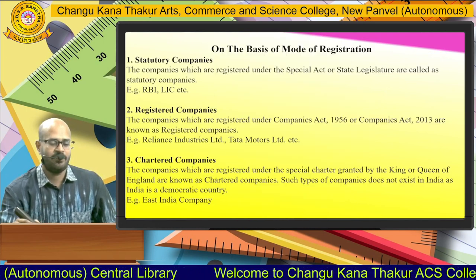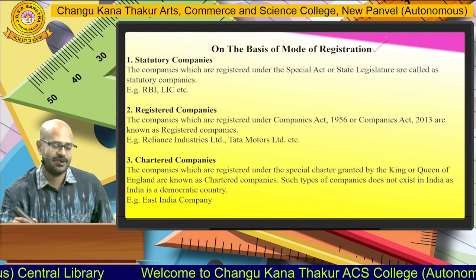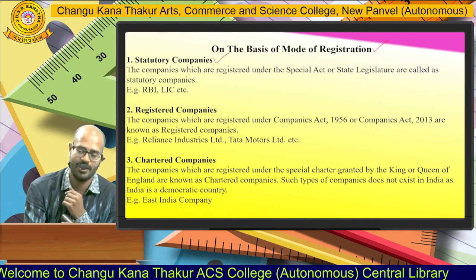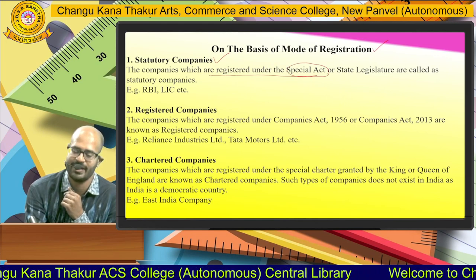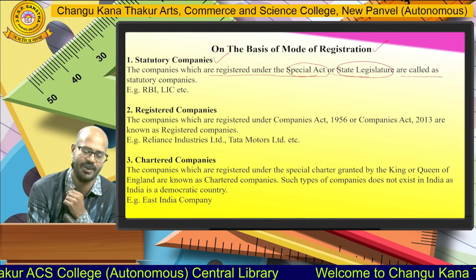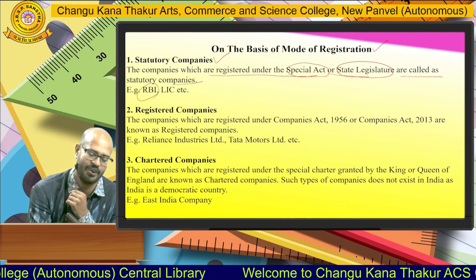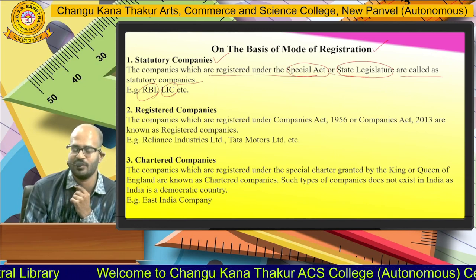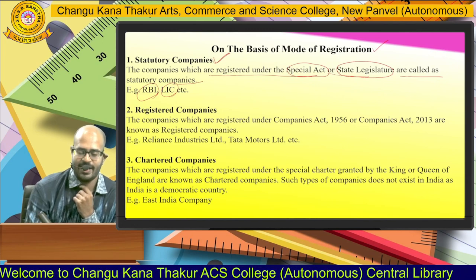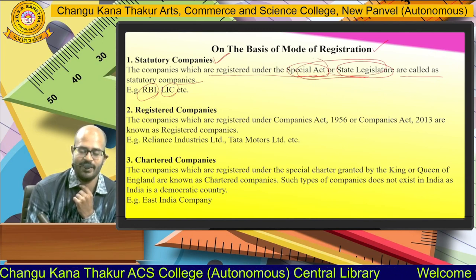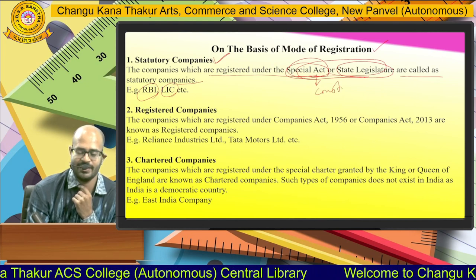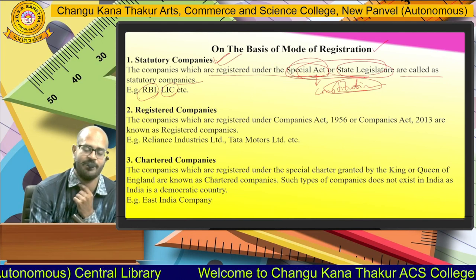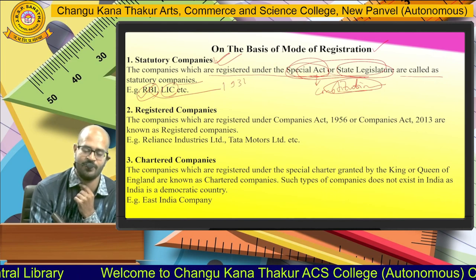Let us discuss one by one. First, on the basis of mode of registration, there are three types. The first is statutory companies — companies which are registered under a special Act or state legislature. Examples include RBI (Reserve Bank of India) and LIC (Life Insurance Corporation). These companies are formed under a special Act, such as the RBI Act of 1934, under which RBI was established in 1935.